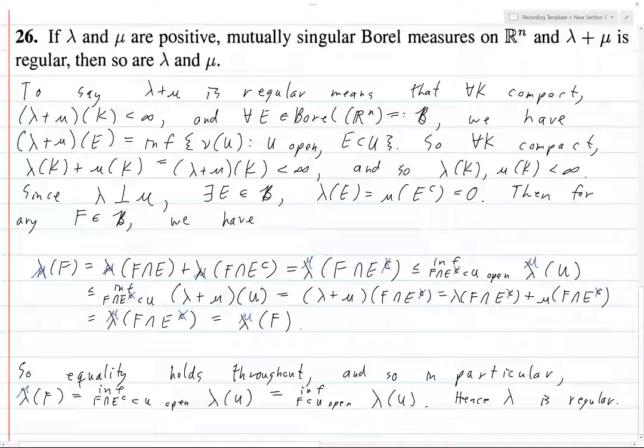This becomes λ and μ. So we remove this complement here. Then we remove this complement here and this one here. Then we leave the μ in there. Then this becomes μ of F. So equality holds throughout. And so in particular, μ(F) equals inf of these things open μ(F). Then it equals inf F in U open μ(U). And hence, μ is regular. I think I've replaced everything that needs to be replaced. But if I haven't, you basically get the idea. It's basically the same exact argument, but you flip around everything that needs to be flipped around. Or I think the Latin for that is mutatis mutandis. So anyways, once you've done this, you have completed the proof.